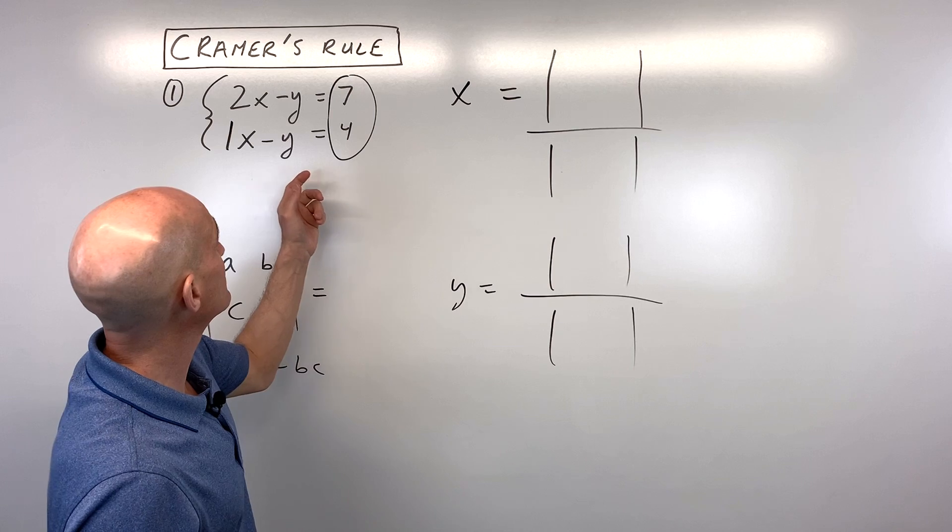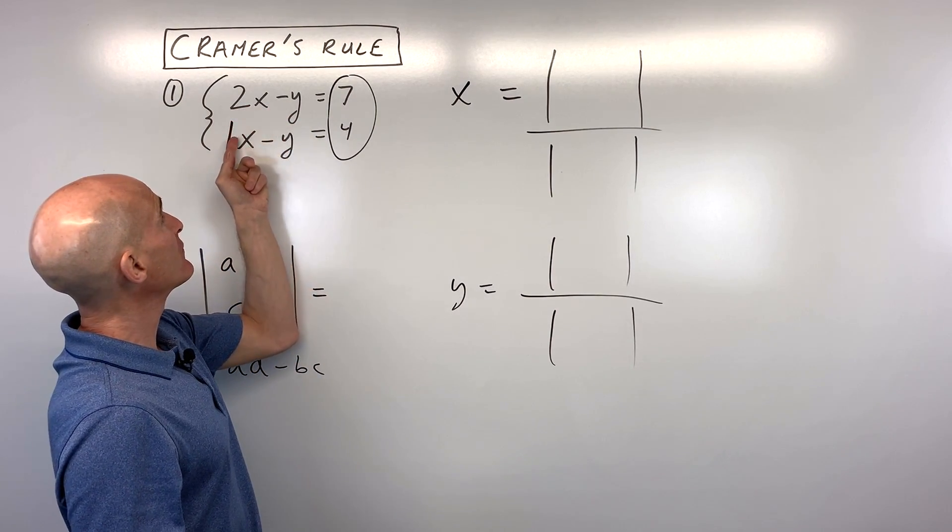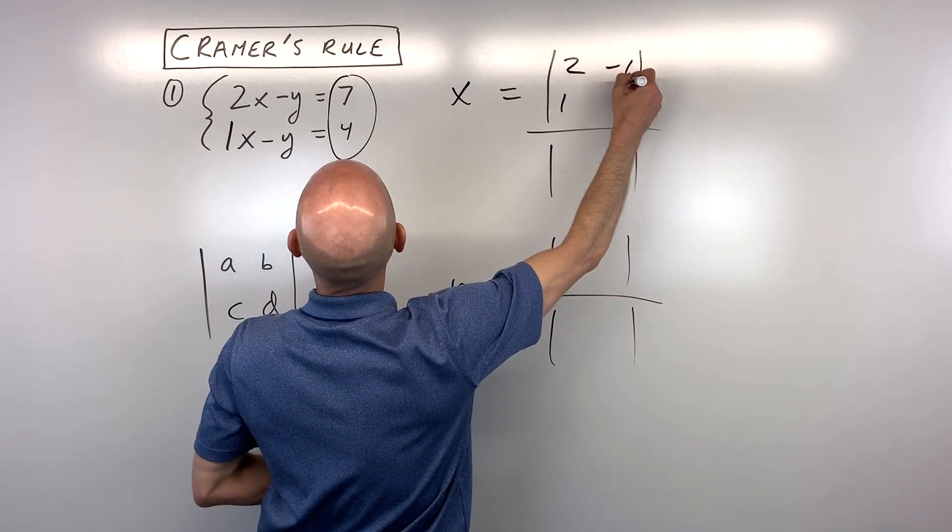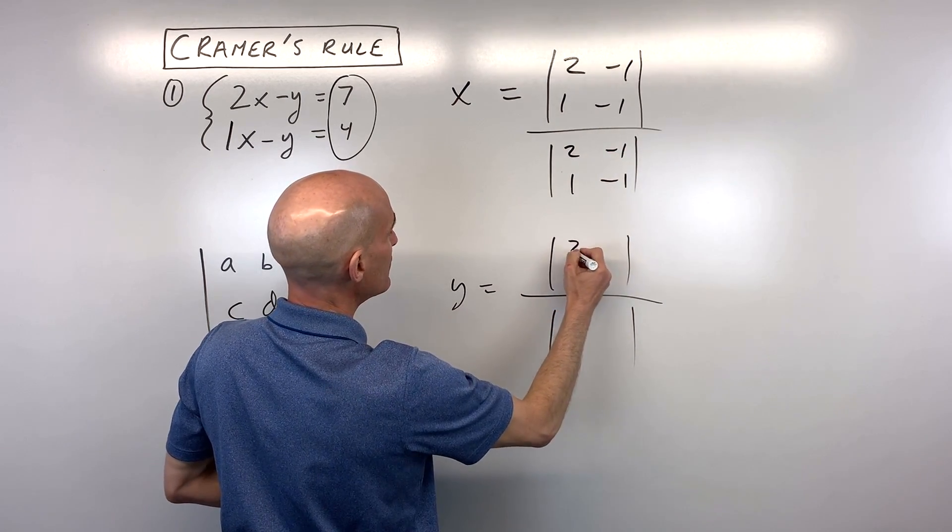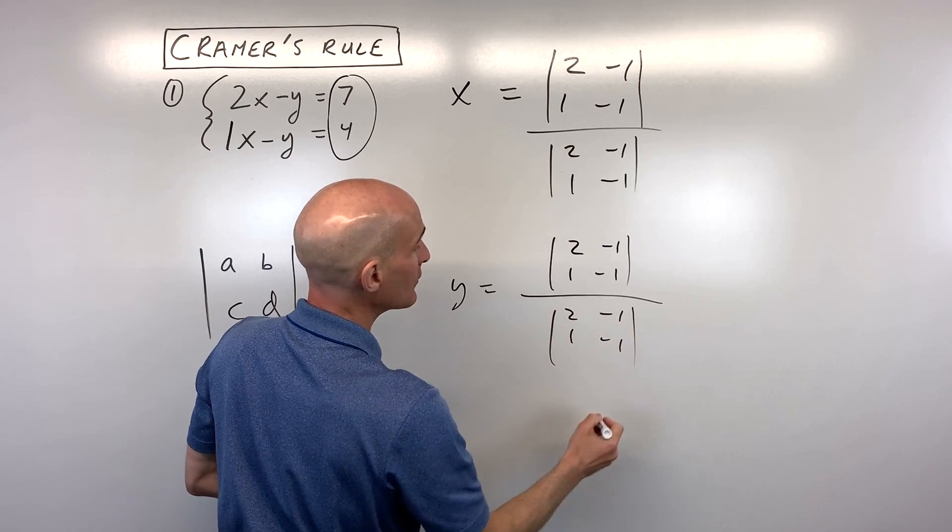And where we get these matrices from is from the coefficients, the numbers in front of the variables here. So we've got 2, 1, negative 1, negative 1. Same thing for the denominator: 2, 1, negative 1, negative 1. Same for y: 2, 1, negative 1, negative 1, and 2, 1, negative 1, negative 1.